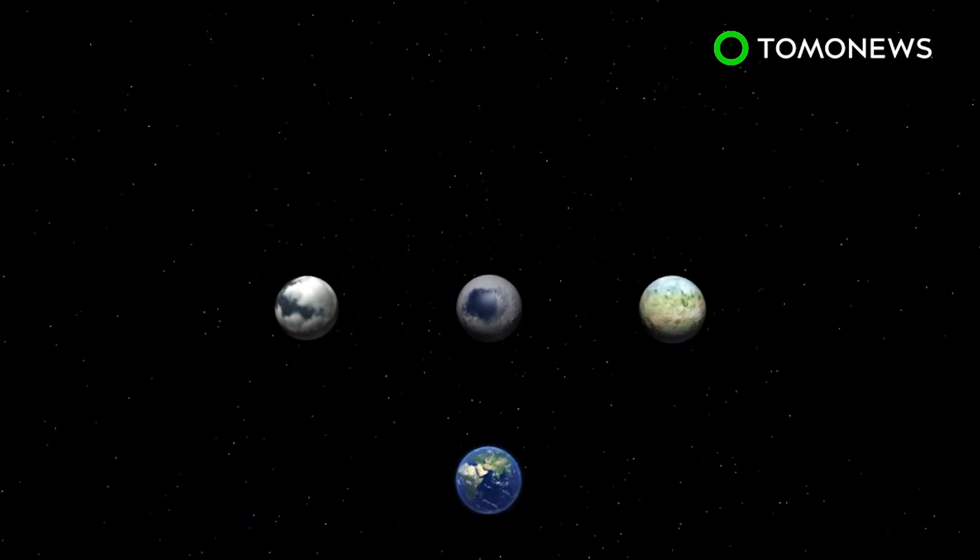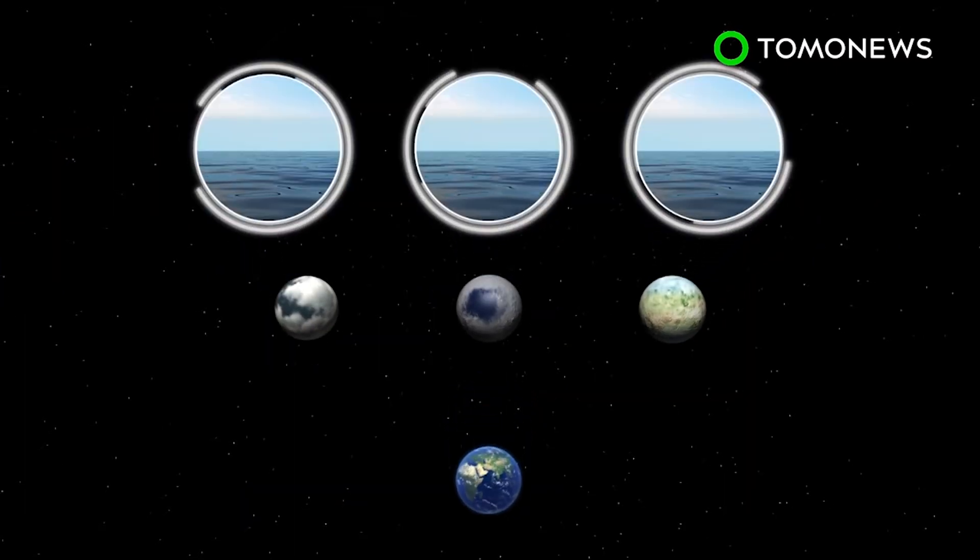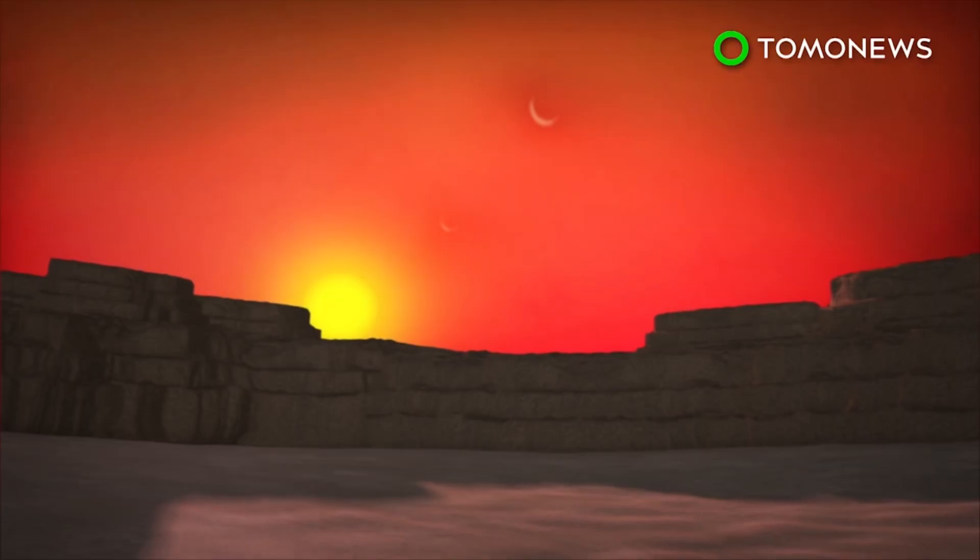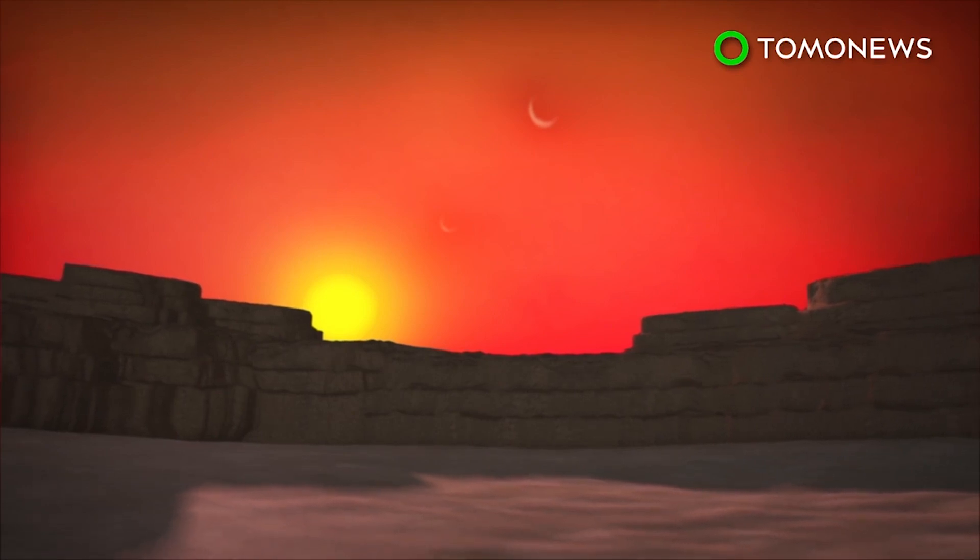Scientists believe their Earth-like planetary compositions may not only support water, but maybe even life. NASA calculations reckon that all the newly discovered planets have a rocky surface, but the space agency says more investigation is needed to determine if any of them contain water.